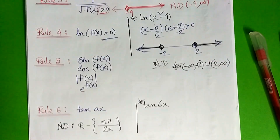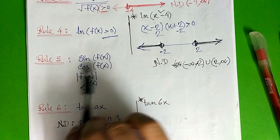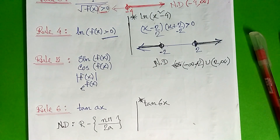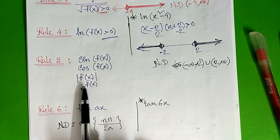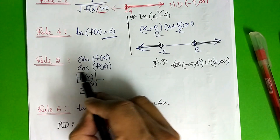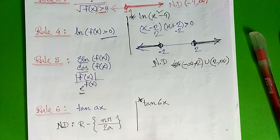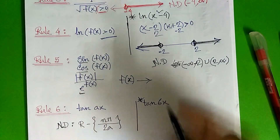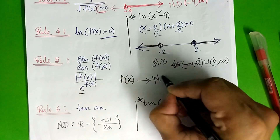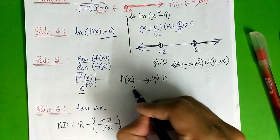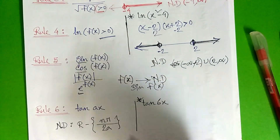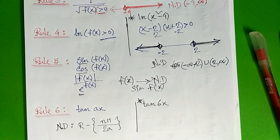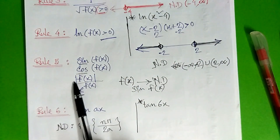The next rule is rule 5. In rule 5 we can see that sin is equal to sin, the cos is equal to the modulus, the modulus is equal to e to the power. In order to know the cos equals x, the cos is equal to sin, the x is equal to sin, and the x is equal to sin. This is the fx domain.